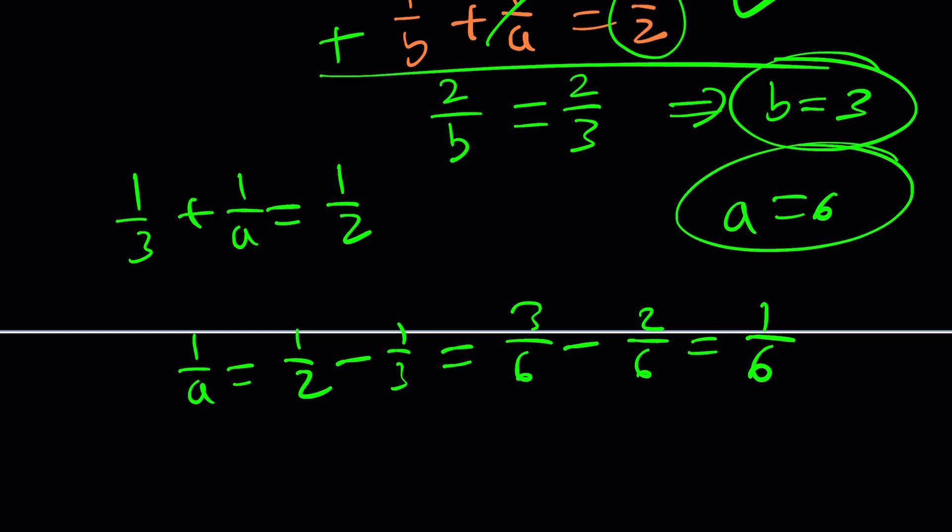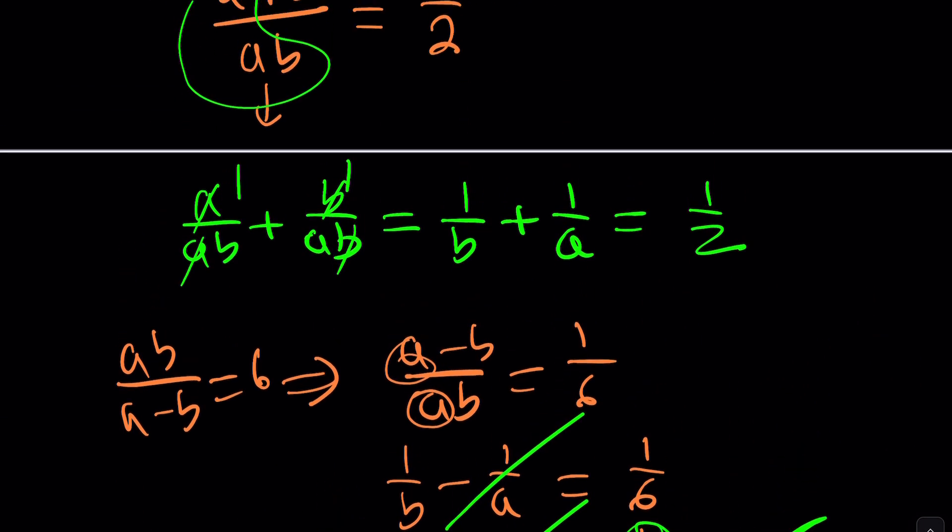Are those the only solutions? Probably, because b equals 0 failed. Why did it fail? Because of the reciprocals. If b is 0, you get 1 over 0, which is undefined — infinity. You're not going to get a valid real solution from this equation if b is 0.